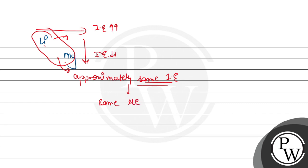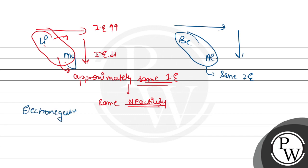Similarly, if you consider beryllium and aluminum, going left to right and going up to down, beryllium and aluminum will have approximately the same ionization energy.